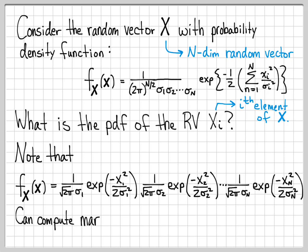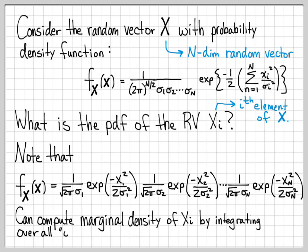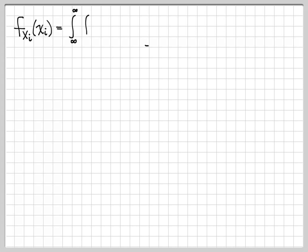We can compute the marginal density function of x_i by just integrating out the dimensions that we don't want. Since we're interested in the i-th dimension, we're going to integrate out the first, second, third, up through i minus 1, and all the dimensions that aren't i, to get the marginal density function that we want.